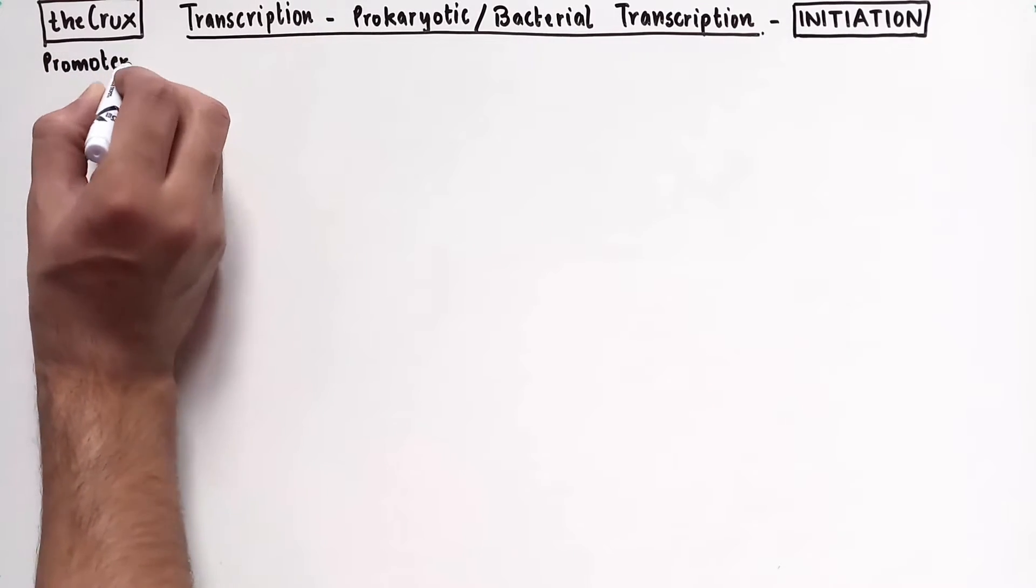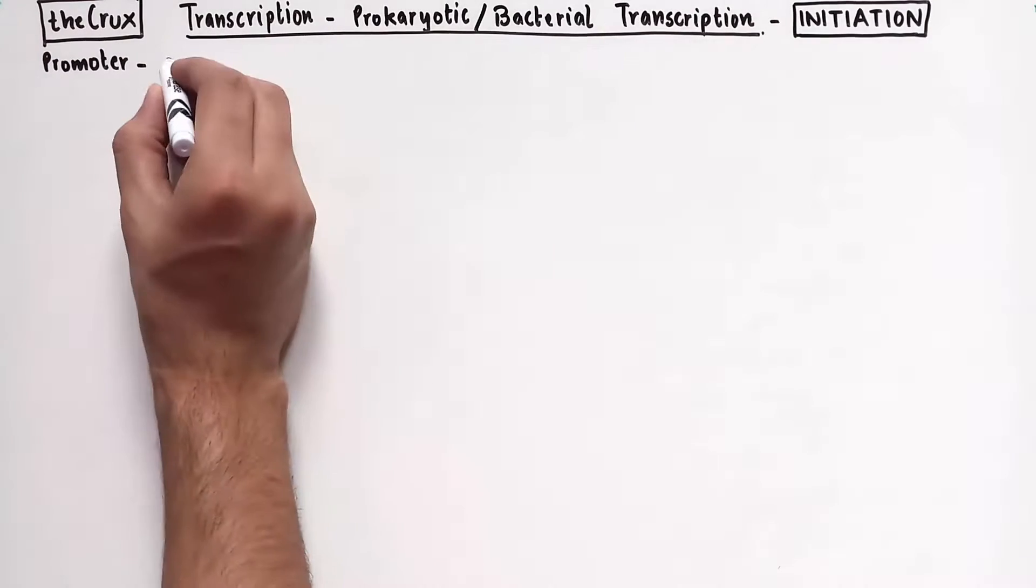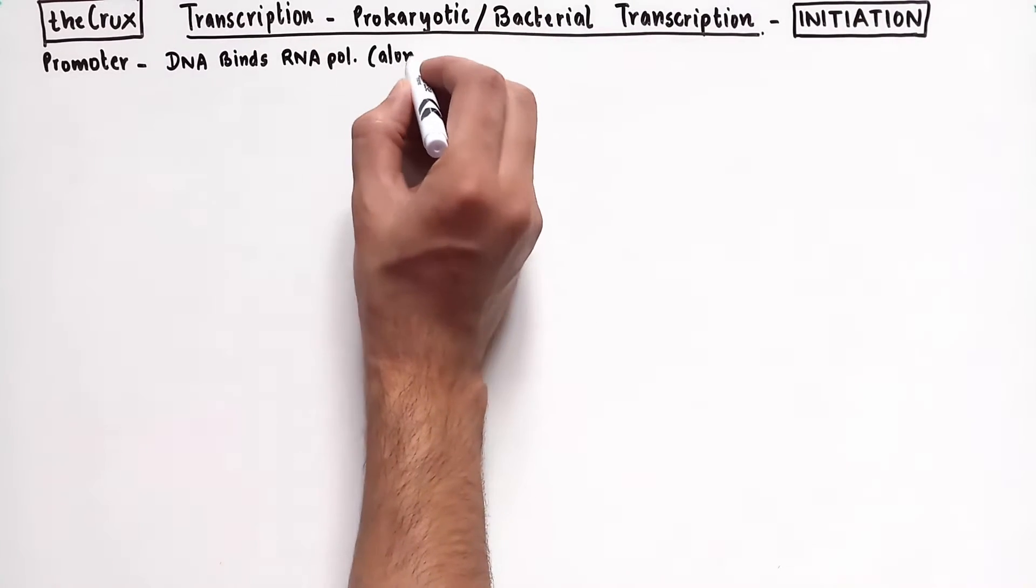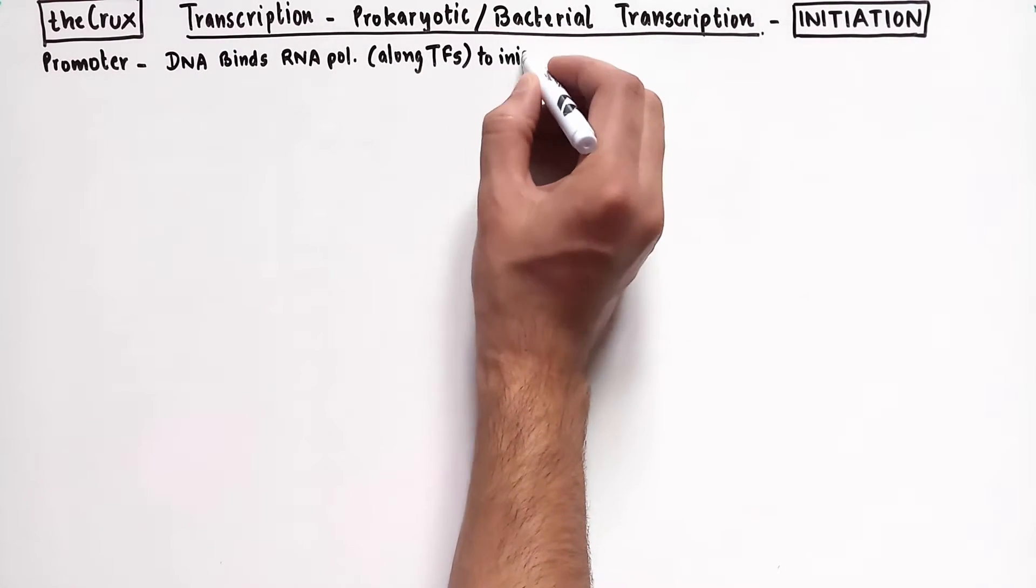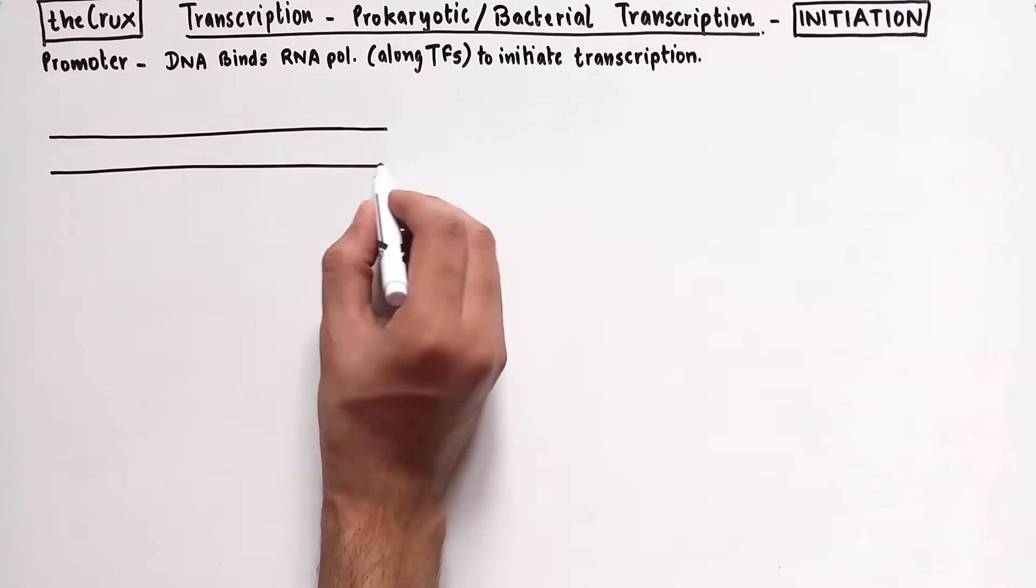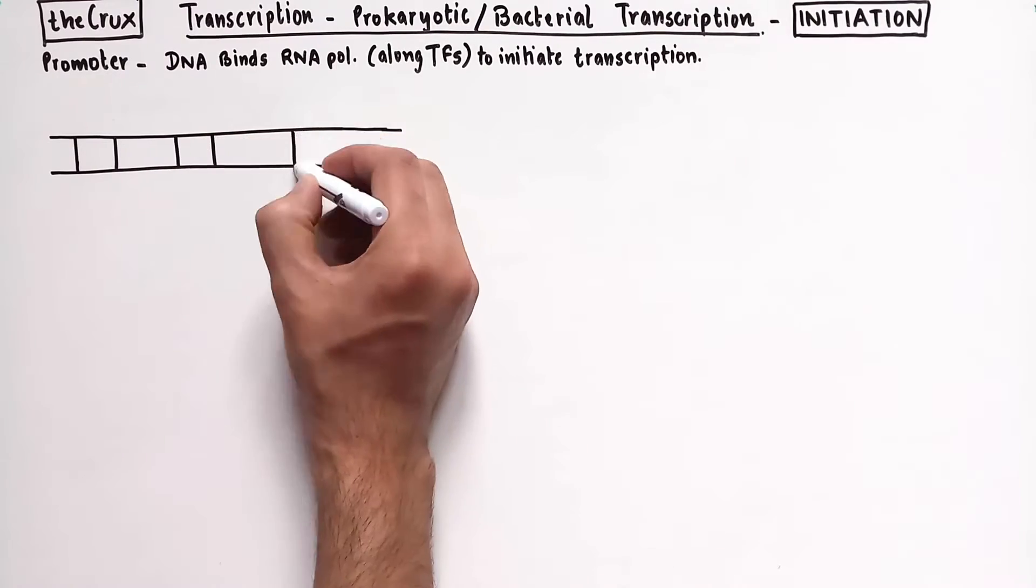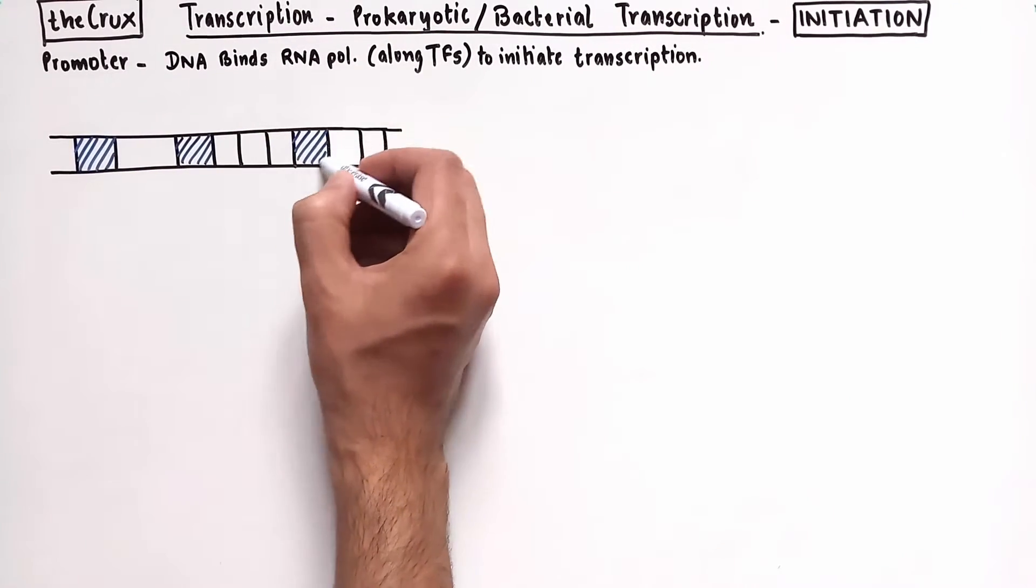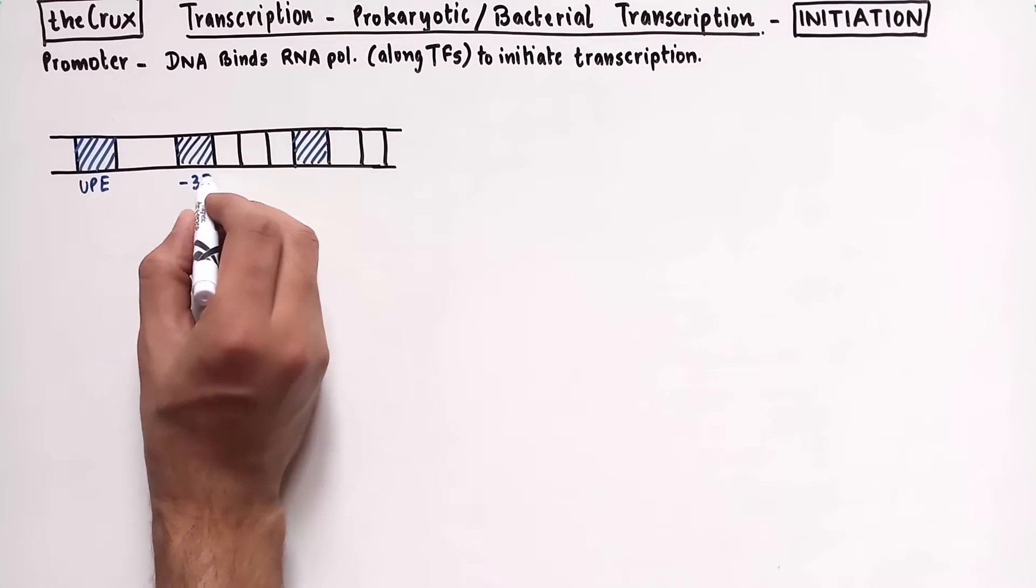In our previous video we discussed that the promoter is a piece of DNA upstream of the coding region that binds RNA polymerase along with some transcription factors to initiate transcription. A brief recap of prokaryotic promoter is that there are three key elements to remember which are the UPE, -35, and the -10 element.